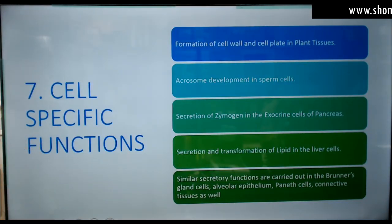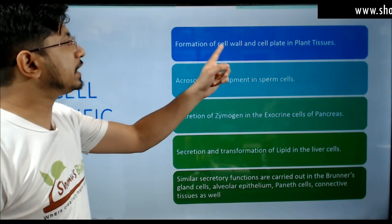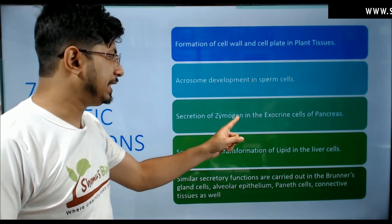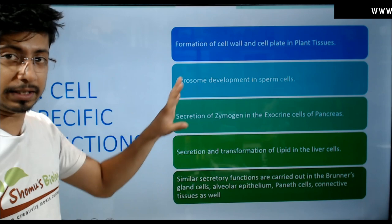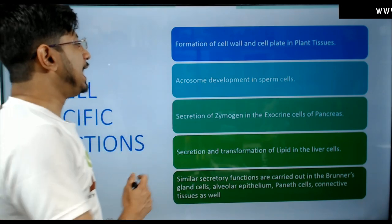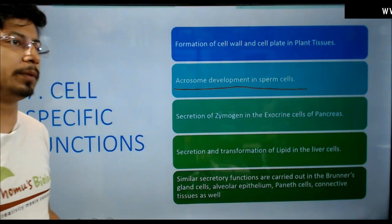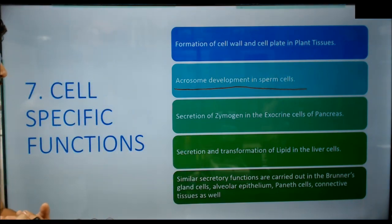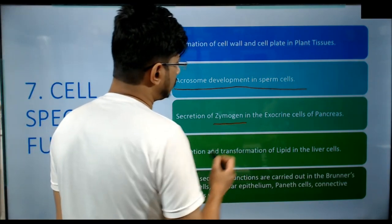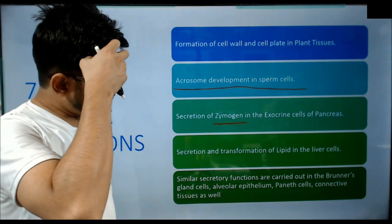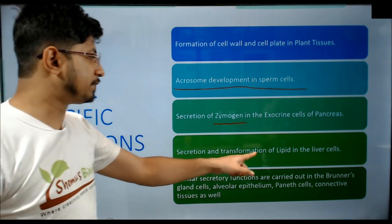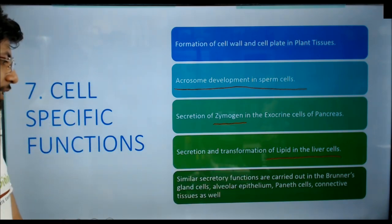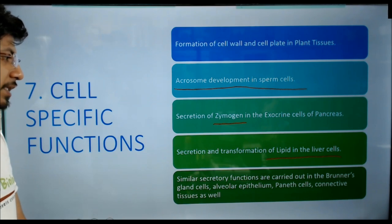Cell-specific functions of Golgi bodies include: formation of cell wall and cell plate in plant tissues; acrosomal development in sperm cells — the acrosomal reaction is very important during sperm fusion; secretion of zymogen in the exocrine cells of the pancreas — zymogen is a pre-enzyme that forms different other enzymes; and secretion and transformation of lipid in liver cells. Similar secretion functions are carried out in Brunner's gland cells, alveolar epithelium, Paneth cells, and connective tissues.